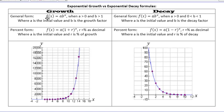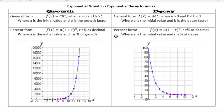Here's the general form for growth and then decay. We're also going to be talking about growth and decay in percents, so when we convert into percents, these are the different formulas we will be using. Something you really need to know: A is the initial value and B is the growth factor, or B is the decay factor. B is really what we're going to be looking for when determining between growth and decay. If it's greater than 1, we'll be looking at growth. If it's less than 1, then we'd be looking at decay.